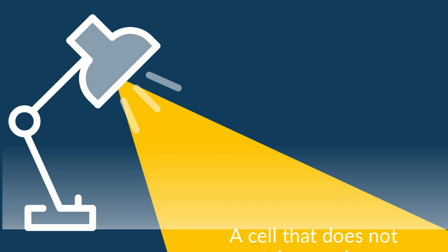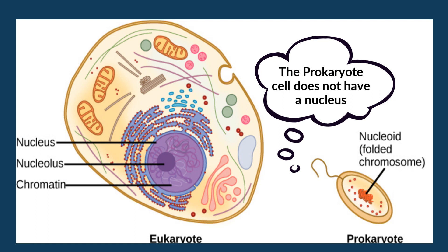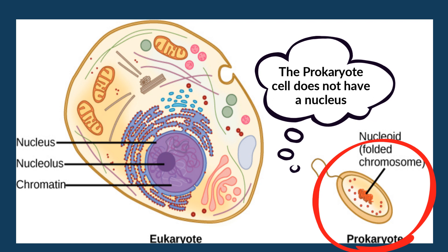Next we have prokaryote. This is a cell that does not contain a nucleus or membrane-bound organelles. If you look at this picture, you can see the difference between a prokaryote cell and a eukaryote cell. Notice the prokaryote is missing a nucleus and organelles.